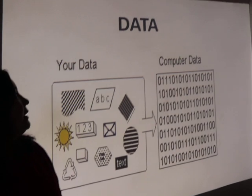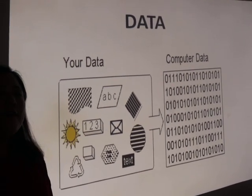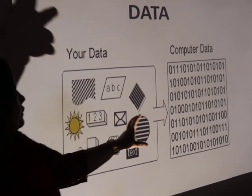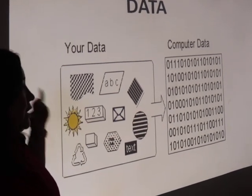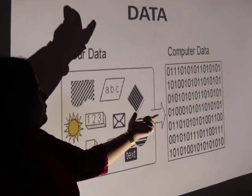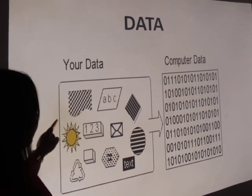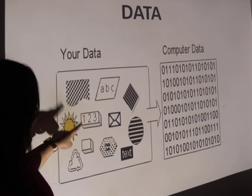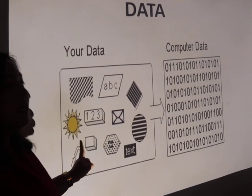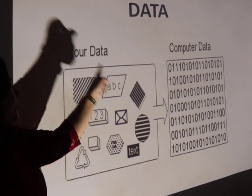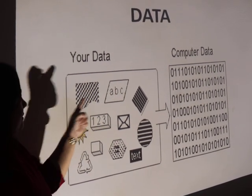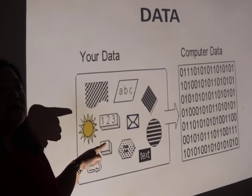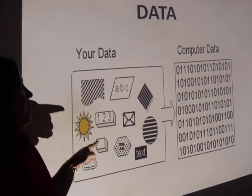The next topic is data. Data are raw facts and figures which have no meaning. As shown in the image, there are different types of data from the user side and also from the computer side — like characters (ABC), numbers (1, 2, 3), text, and various symbols. So basically, data is a collection of characters, numbers, and various symbols that have been coded in order to be given as input to the computer.